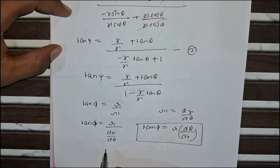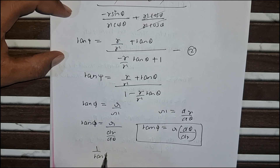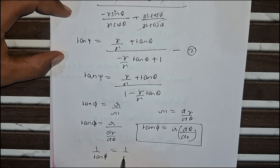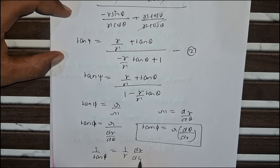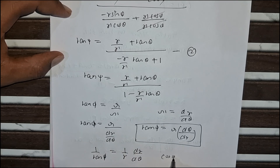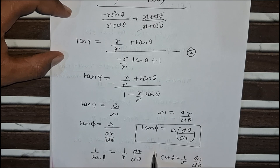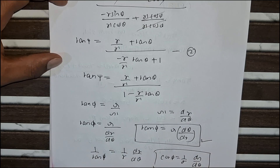We can also write this in terms of cot φ: since 1/tan φ equals cot φ, and 1/(r · dθ/dr) equals (1/r) · dr/dθ, we get cot φ equals (1/r) · dr/dθ. Thank you.